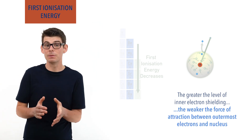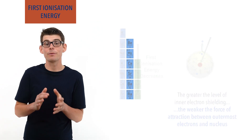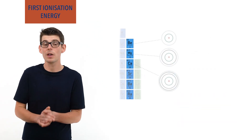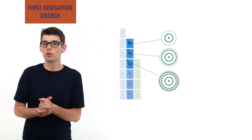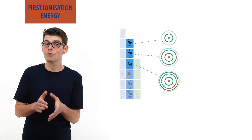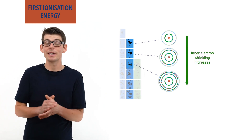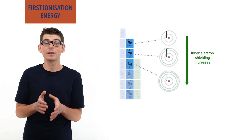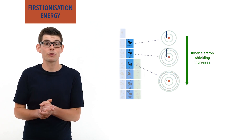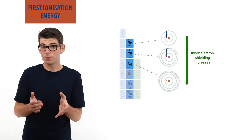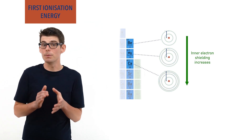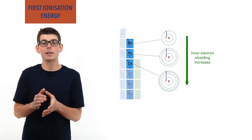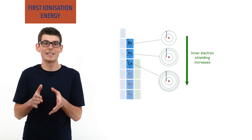As elements below each other in a group have more inner electron shells than the elements above, the level of inner electron shielding is greater, meaning outer electrons are further from the nucleus and experience a weaker attraction to it. As a result, it is easier to remove these electrons from the atom and the first ionization energy decreases.